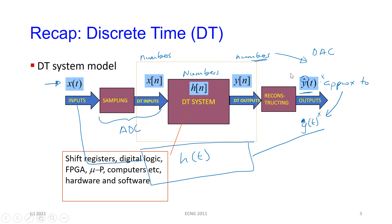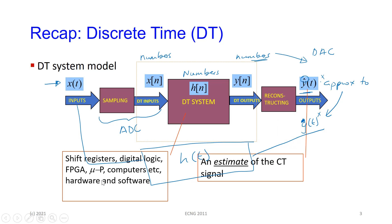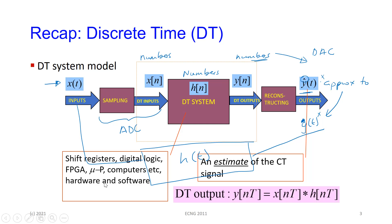The discrete time system invariably will be microprocessors, FPGAs, computers, hardware, software, digital logic, shift registers, counters. The input-output relationship is again a convolution — a discrete time convolution. Because of the Z transform, that also allows us to express it so that the convolution in discrete time becomes a multiplication in the Z domain.